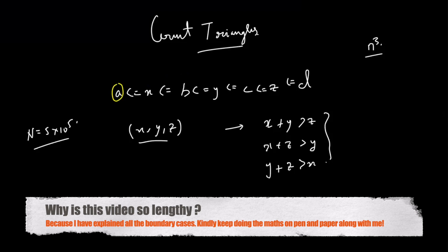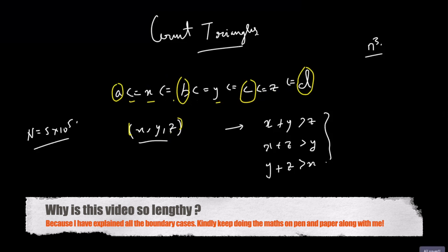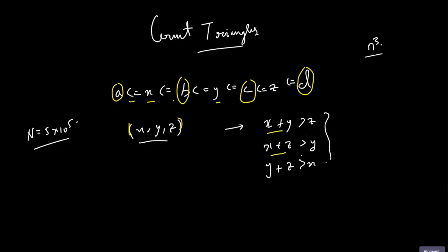The problem states: given A, B, C, and D, you have to find X such that it lies between A and B, Y such that it lies between B and C, and Z that lies between C and D. You have to form this triplet and count how many triplets form degenerate triangles — triplets satisfying X plus Y greater than Z, X plus Z greater than Y, and Y plus Z greater than X. You print the count of such triplets.